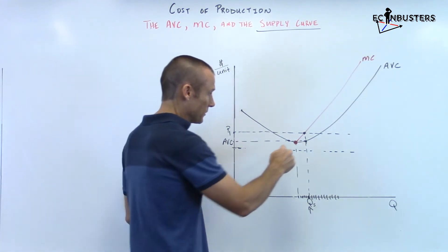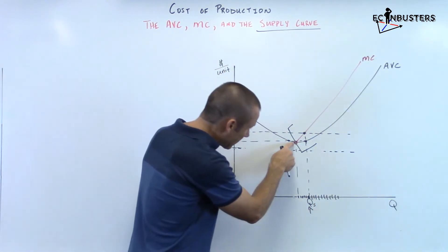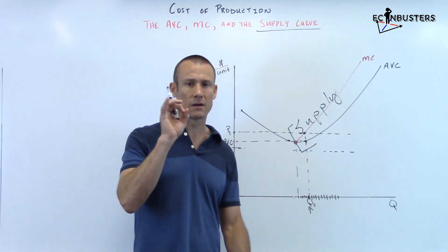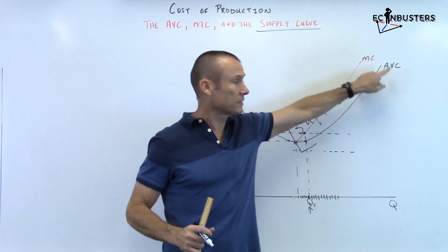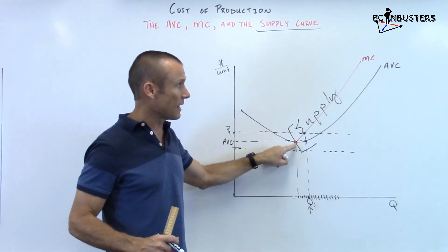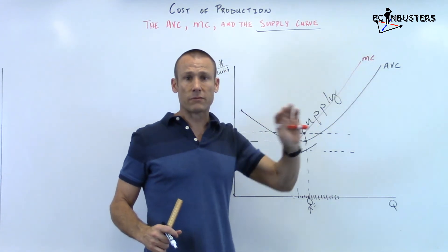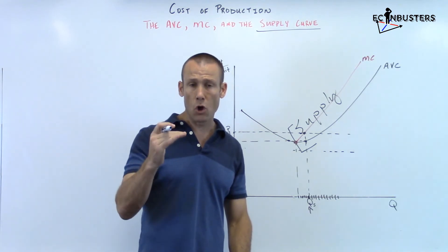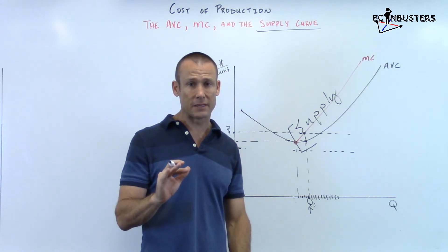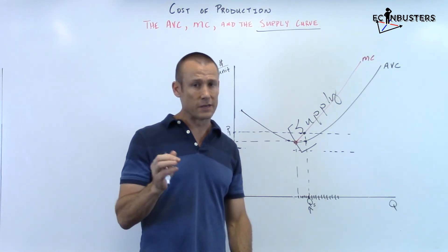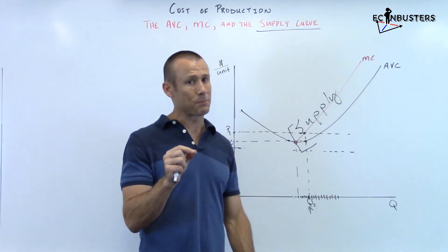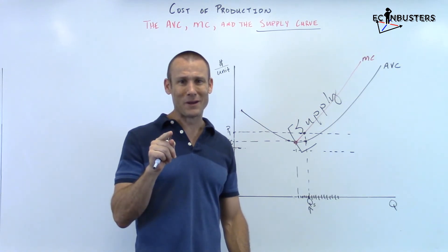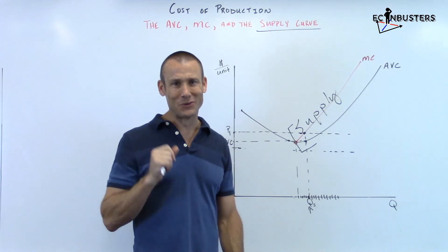So there it is. I put a bracket at that point and write 'supply' on the MC. Here's the takeaway: I know the relationship between MC and AVC, and I know that the portion of MC that lies above minimum AVC is the supply curve. Any portion of the MC below AVC is not the supply curve. If price is ever below minimum AVC, shut that plant down — you'll only incur fixed cost. If price gets above minimum AVC, at least operate in the short run. Thanks for tuning in.